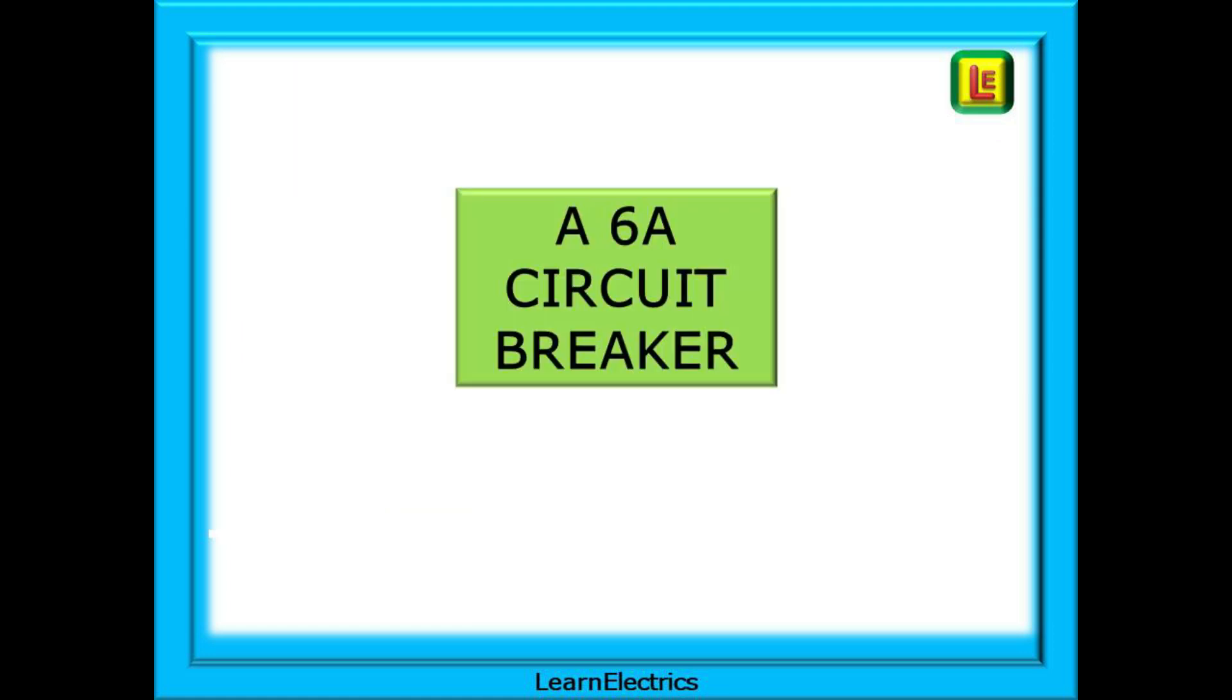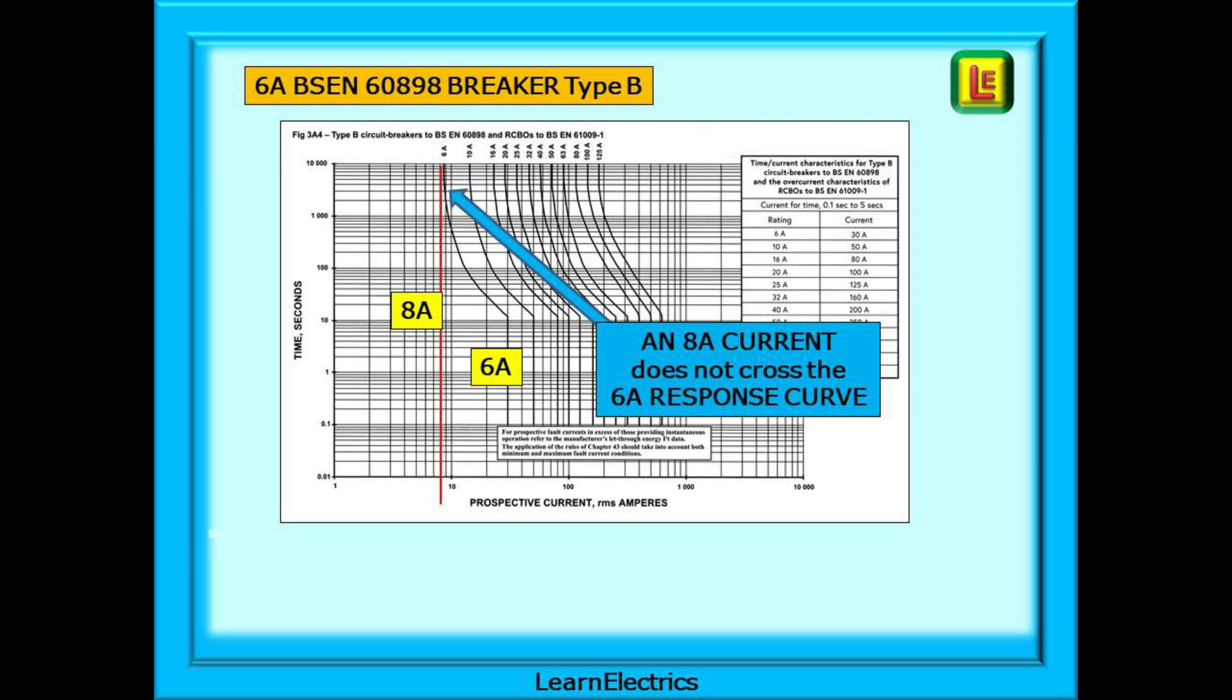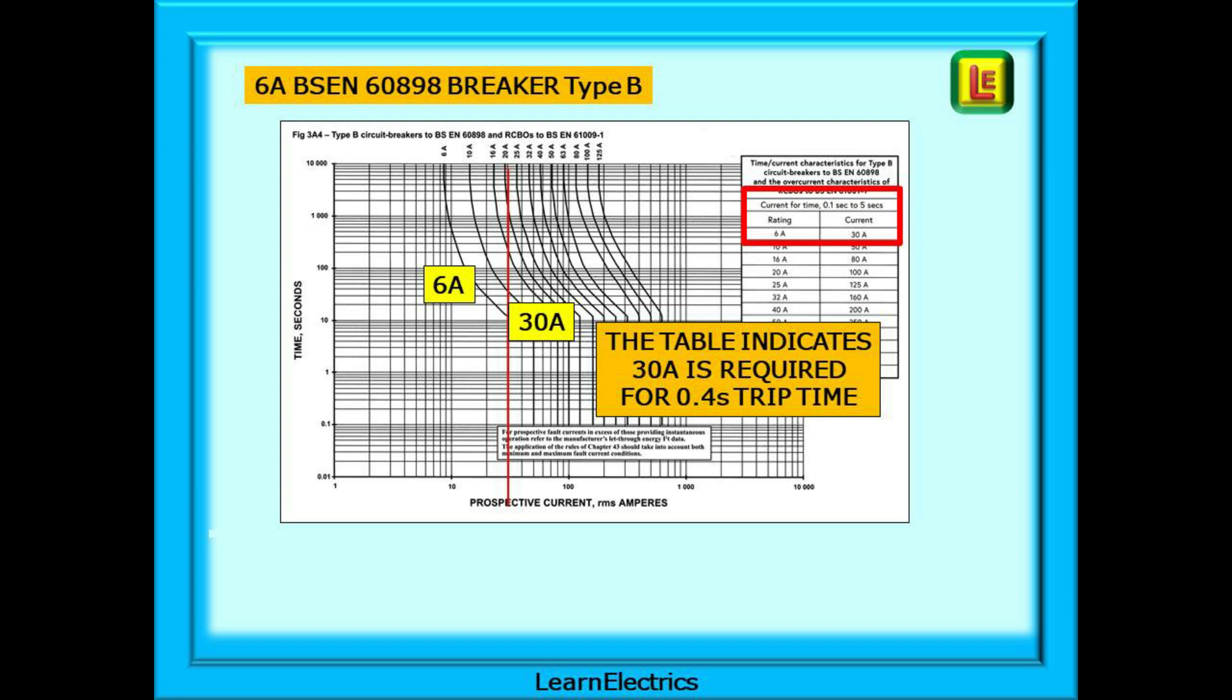Let's look now at a 6 amp circuit breaker such as we install in today's consumer units. Here we've shown the chart for a 6 amp BS EN 60898 Type B circuit breaker. It's also the same chart for a 6 amp RCBO to BS EN 61009-1. Look at the chart you can see that at 8 amps the fault current line and the response curve do not cross. The breaker will not trip. This is why with our TT system right at the beginning of this video we said that we could not rely on our circuit breaker to protect us. It will not trip so we rely on the protection offered by the RCD. Looking at the top right table on the page we can quickly determine that we need a fault current of 30 amps for a 6 amp Type B circuit breaker to operate within 0.4 seconds.